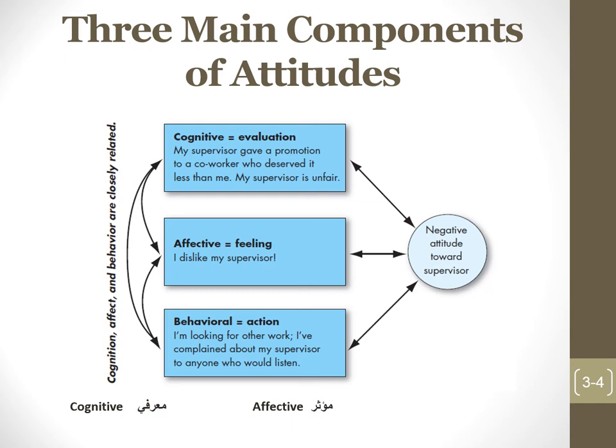There are three main components of attitudes: the cognitive component (evaluation), the affective component (feelings), and the behavior component (action). For example, the cognitive component: 'My supervisor gave a promotion to a co-worker who deserved it less than me — my supervisor is unfair.' She evaluates her supervisor as unfair.